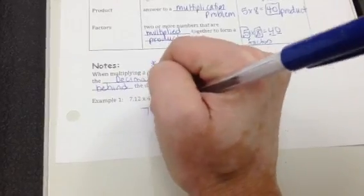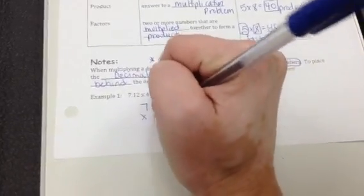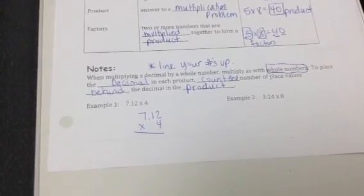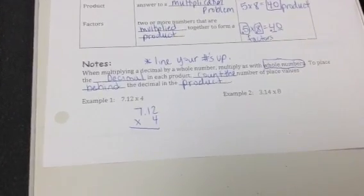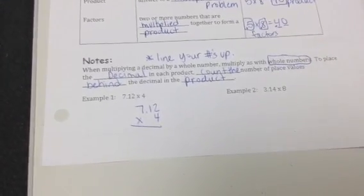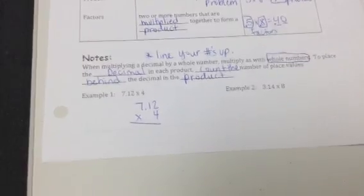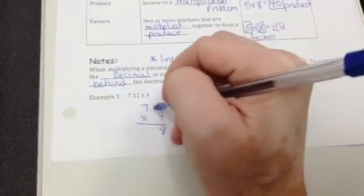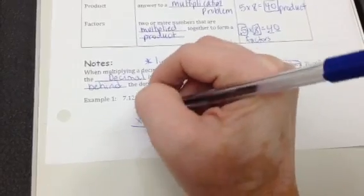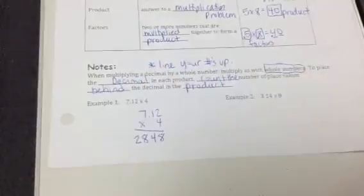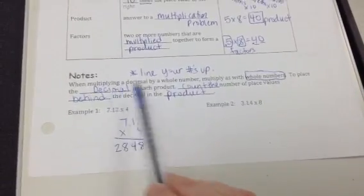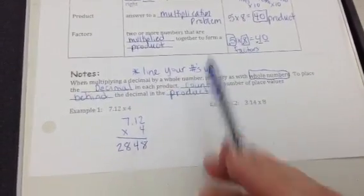So we're going to start with an easy one, Example number one. First we need to line our numbers up just like they were whole numbers. So I line them up. I did not worry about the decimal in 7.12. Just line up your numbers like they're normal numbers. Ignore the decimal until the end. So 4 times 2 is 8, 4 times 1 is 4, 4 times 7 is 28.